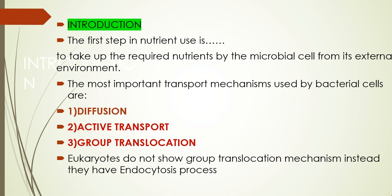We find diffusion and active transport in eukaryotes, but we won't find the third type — group translocation. The mechanism found in eukaryotes instead is endocytosis, and this endocytosis is absent in most bacteria or prokaryotic cells.